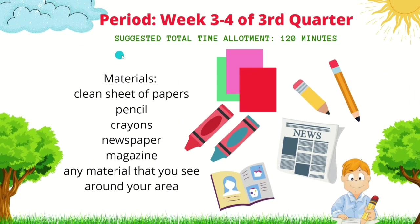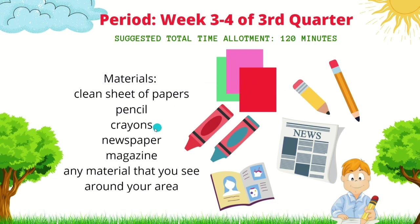This module is for week 3 and 4 of the 3rd quarter. Our total time allotment is 120 minutes. The materials we will need include clean sheets of paper — this could be bond paper — pencil, crayons, newspaper, magazine, or any material that you can find around your area.